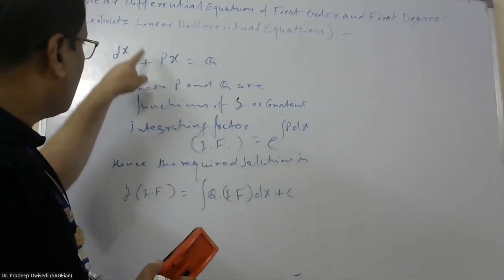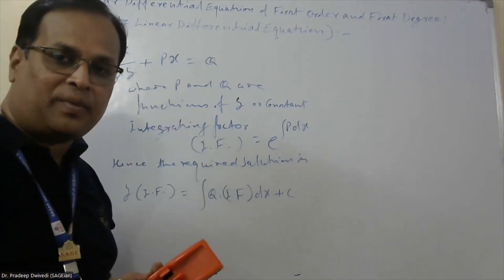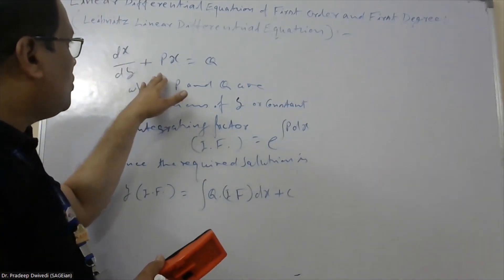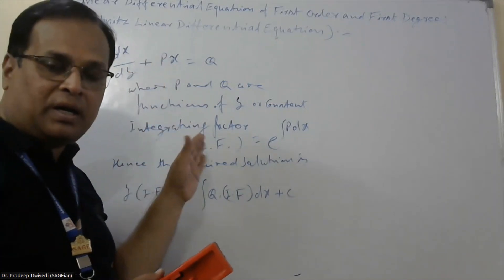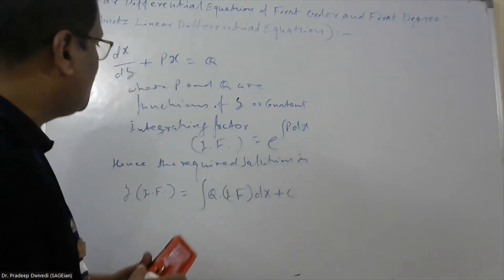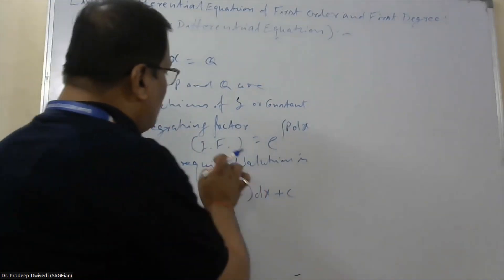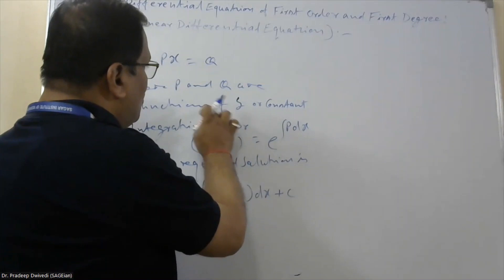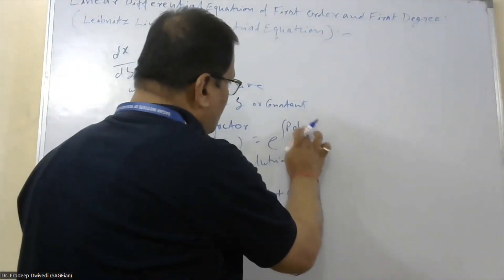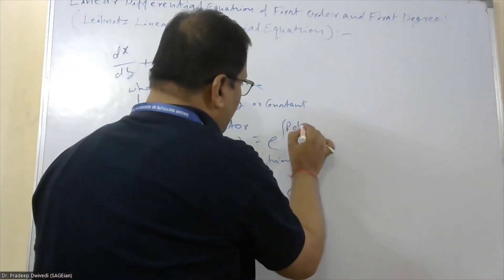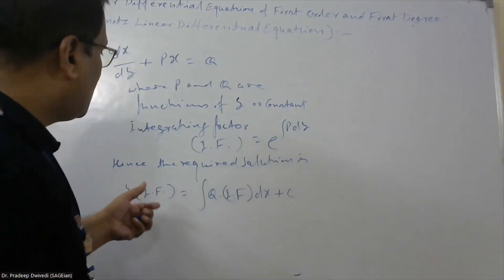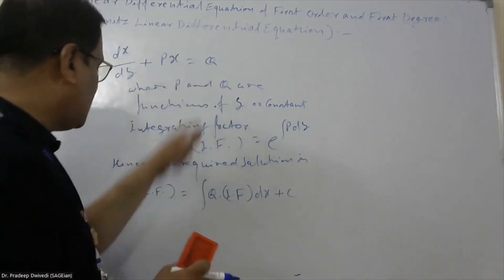So here x is the dependent variable and y is the independent variable. This equation is solved in a similar way — we find the value of x with respect to y. The integrating factor here is a function of P with respect to y, i.e., e to the power integral of P dy. Hence the required solution of this equation follows the same general formula.